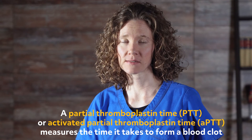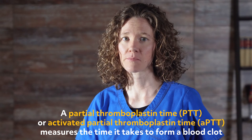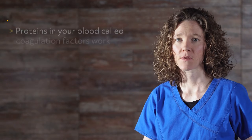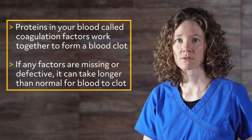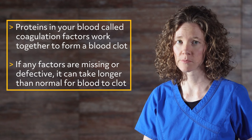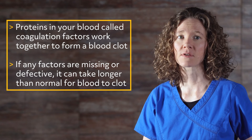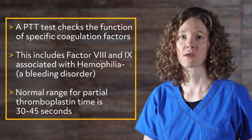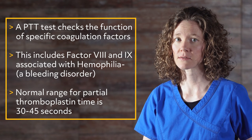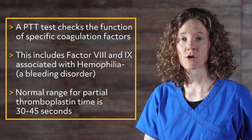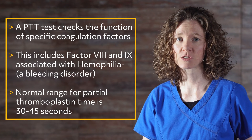A partial thromboplastin time, or PTT, also called activated partial thromboplastin time or APTT, measures the time it takes to form a blood clot. Proteins in your blood called coagulation factors work together to form a blood clot. If any factors are missing or defective, it can take longer than normal for blood to clot. A PTT test checks the function of specific coagulation factors, including factor VIII and IX associated with hemophilia, a bleeding disorder. Normal range for partial thromboplastin time is 30 to 45 seconds.